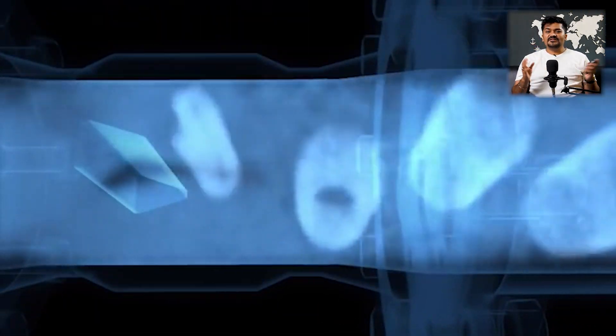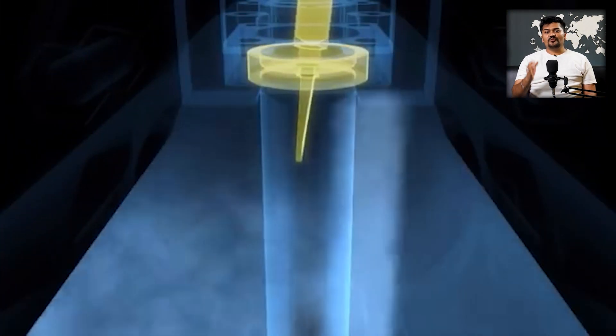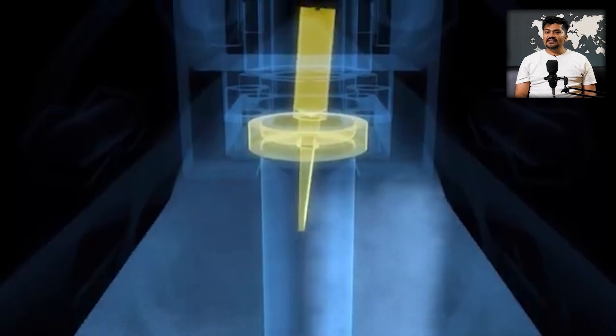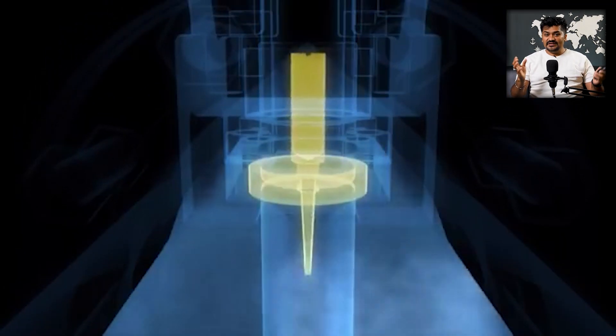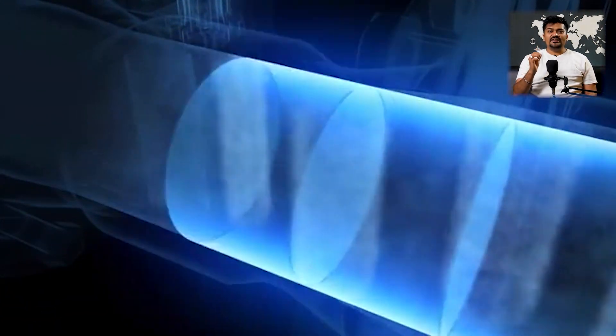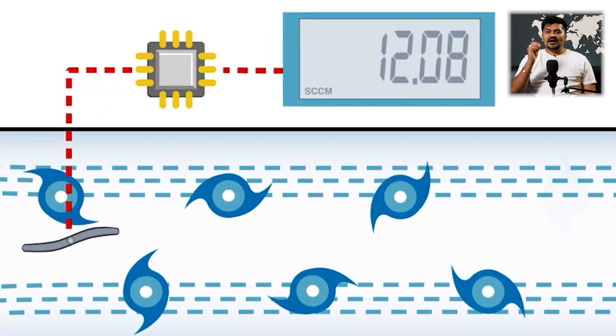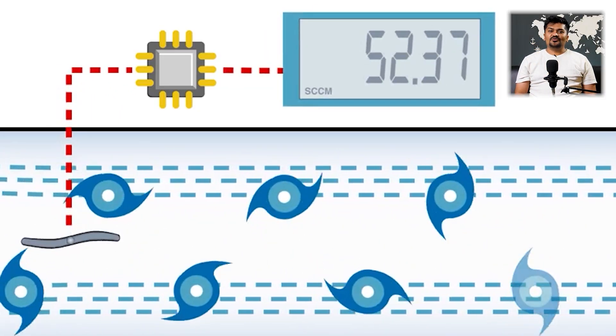The frequency of oscillation is directly proportional to the velocity of the fluid moving through the pipe. The sensing element then converts that oscillation to an electrical signal, which travels through the processor where it is converted into a quantifiable velocity reading. This is how we can get the actual flow reading.